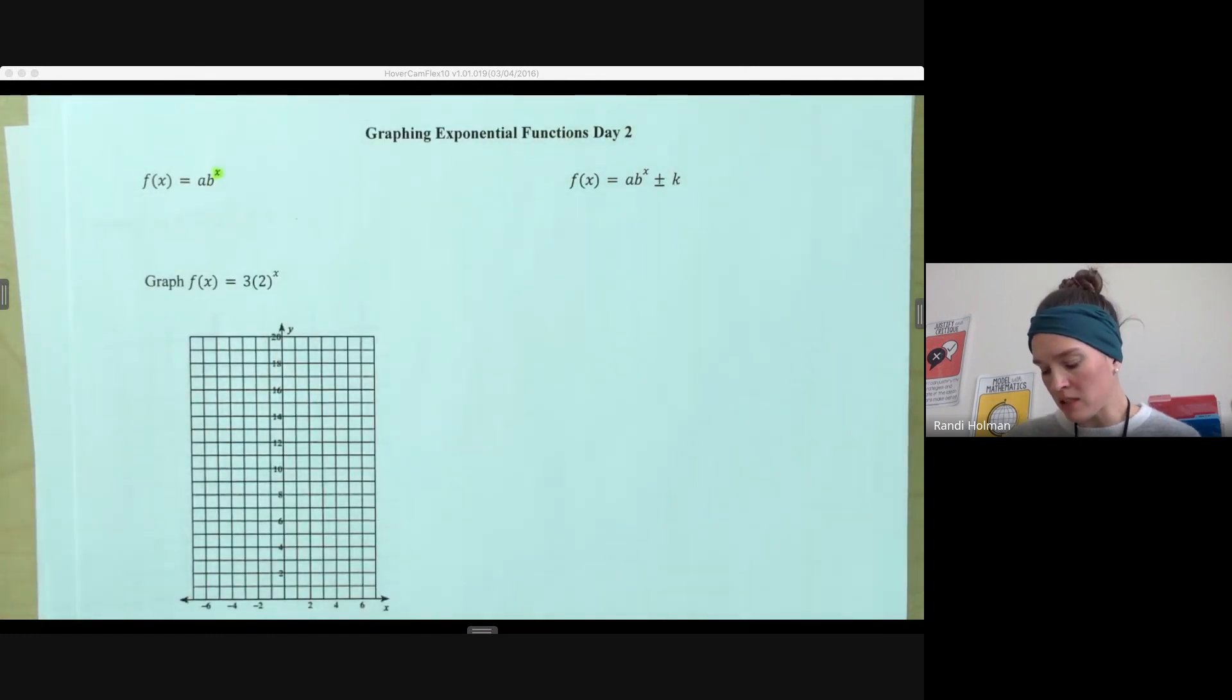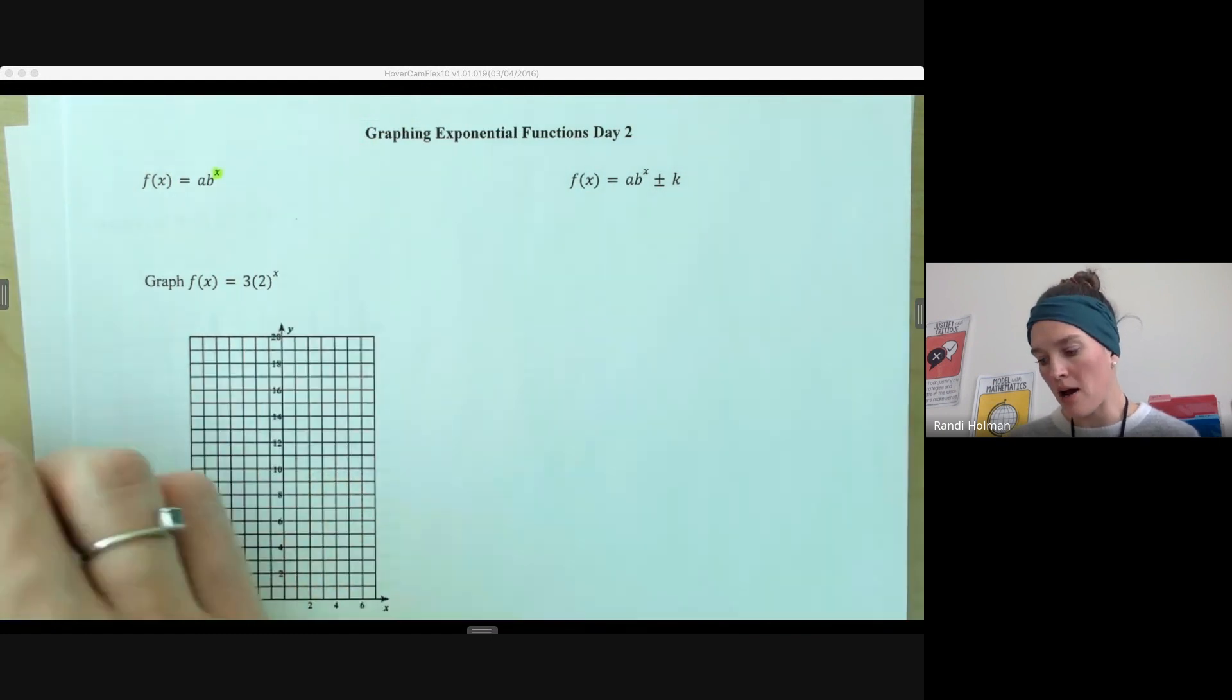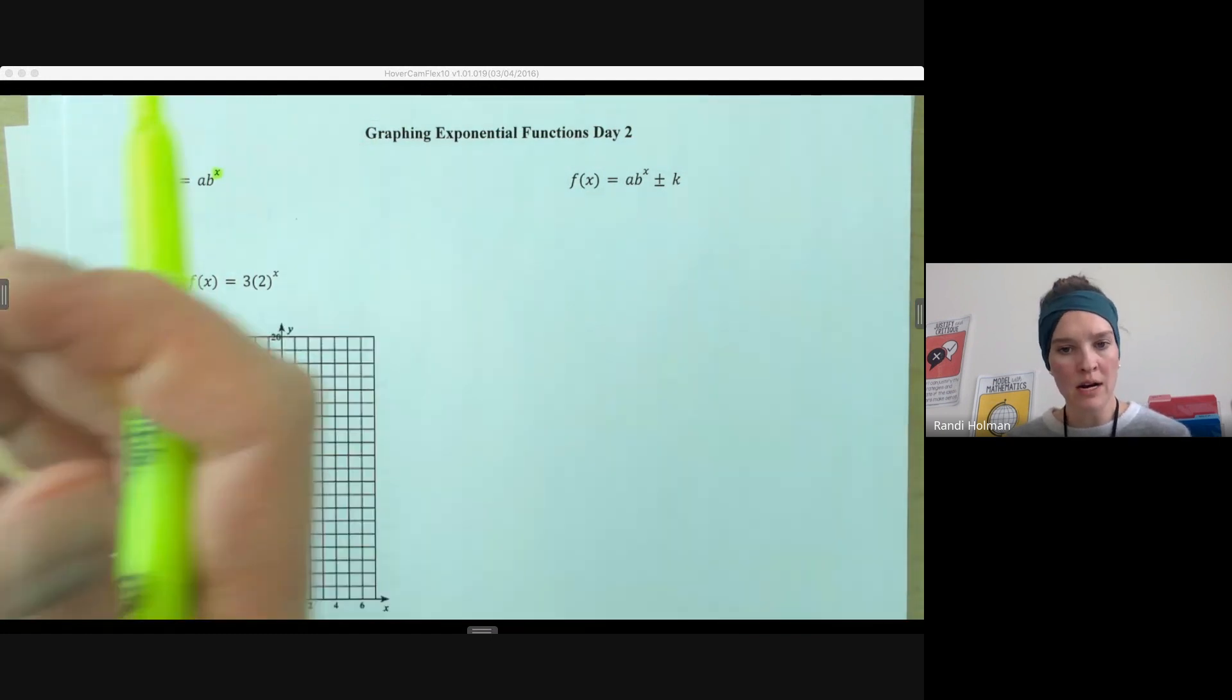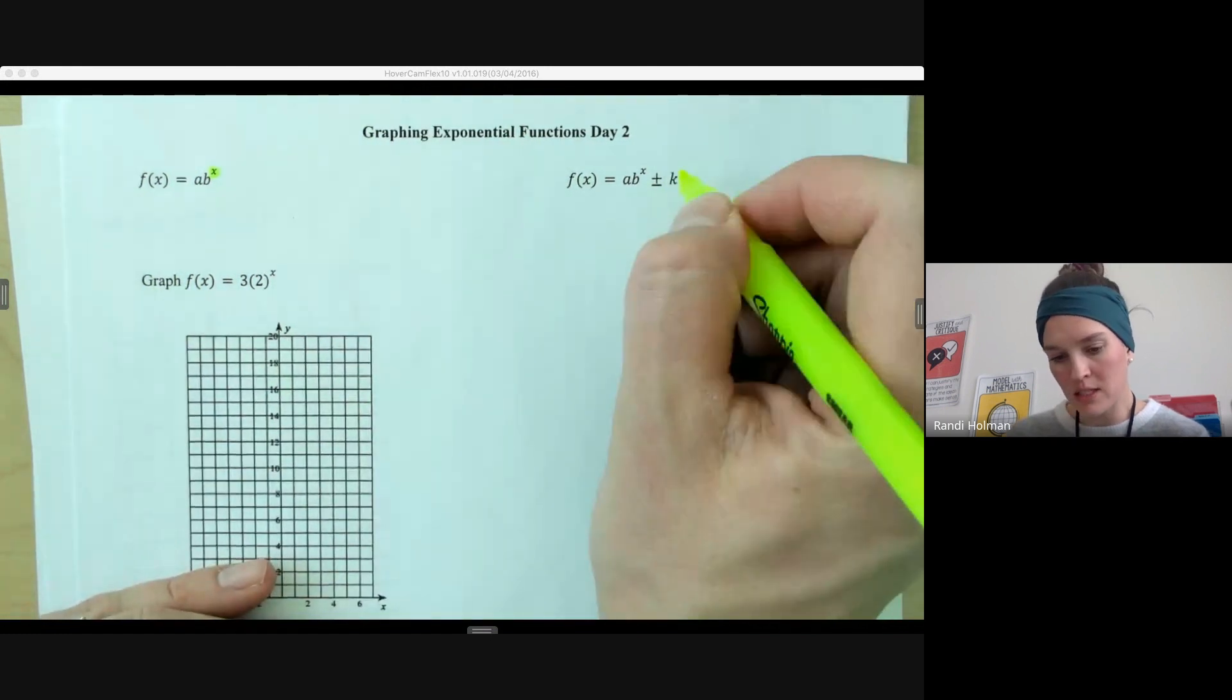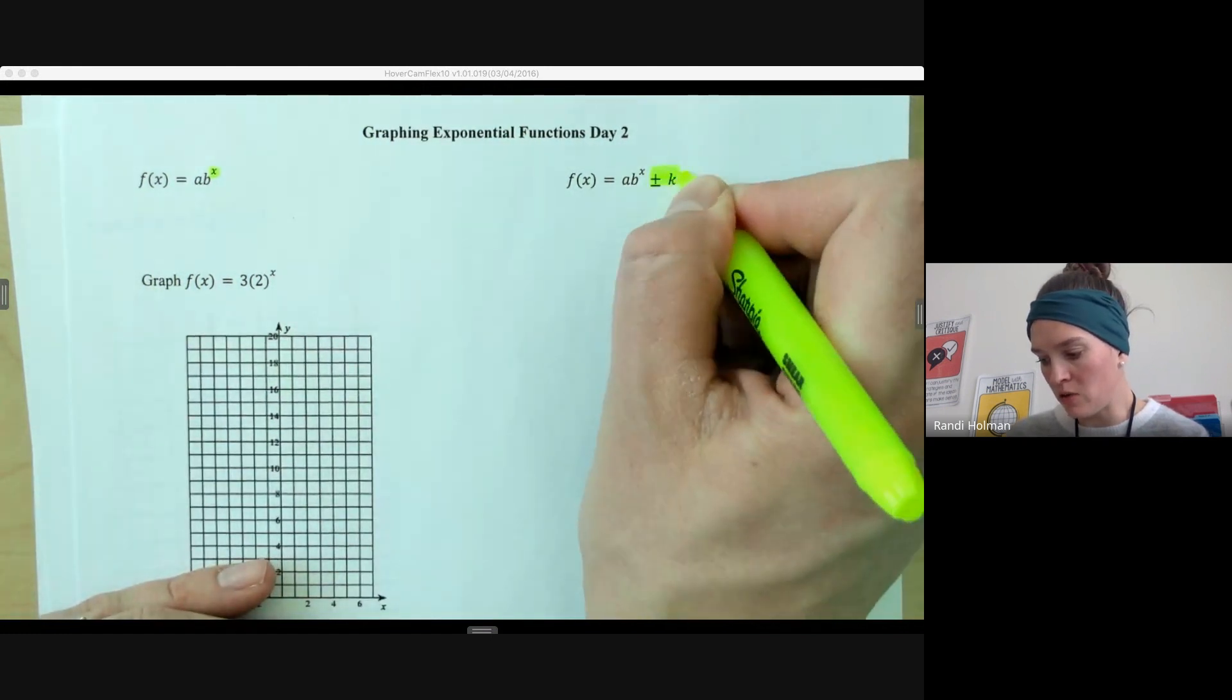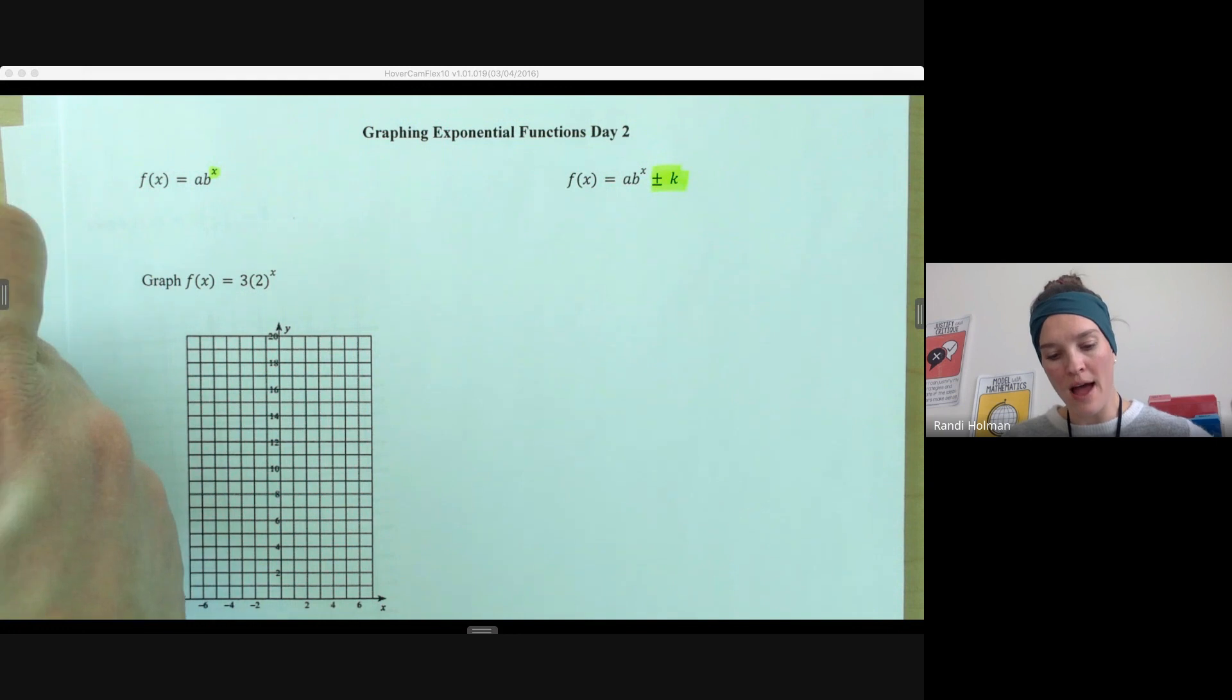Today we're going to look at also some transformations, so we can also move this graph up or down. So if we have a regular graph of a times b to the x, if we add or subtract something to that, that's just going to change all of our y values by that amount. It's going to look like the same graph, but just moved up or down along our y axis there.